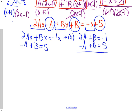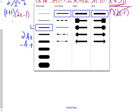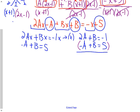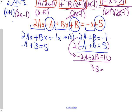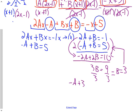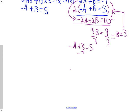Rewriting the system: 2A plus B equals minus 1, and negative A plus B equals 5. We need to solve for A and B. To eliminate, multiply the bottom equation by 2: negative 2A plus 2B equals 10. Adding the two equations: 2 minus 2 is 0, 1 plus 2 is 3B, equals 10 minus 1 which is 9, so B equals 3. Plugging back into the bottom equation: negative A plus 3 equals 5, minus 3 from both sides gives negative A equals 2, so A equals minus 2.